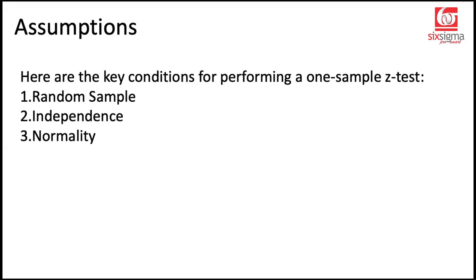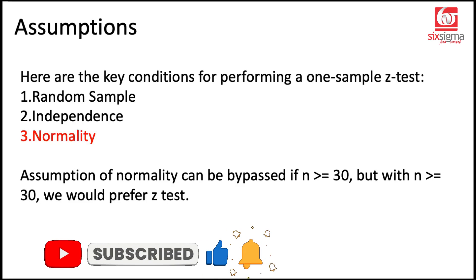The assumptions of one-sample t-test involve the sample to be selected randomly, the observations within the sample to be independent, and the normality of the parent population. Notice that if your sample size is greater than or equal to 30, you can bypass the assumption of normality of the parent population. But if your sample size in general is greater than 30, in case of one-sample scenarios, you would prefer z-test over a t-test.